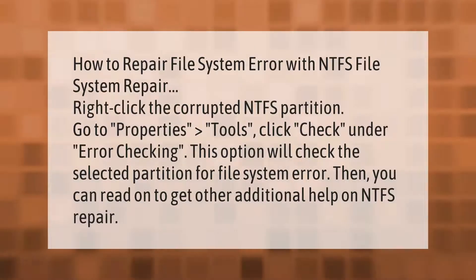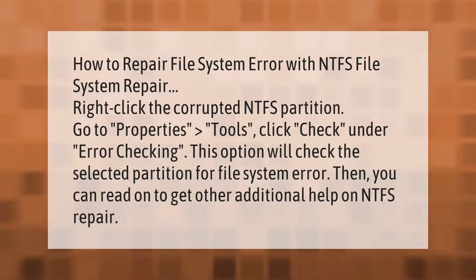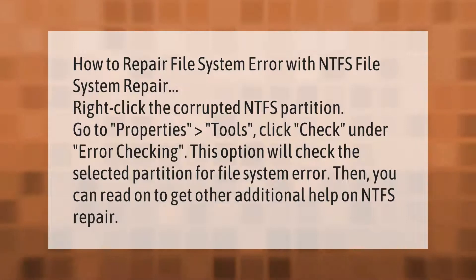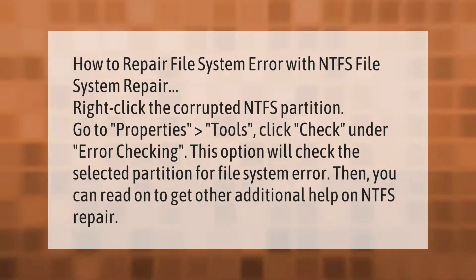To repair a file system error with NTFS file system repair: right-click the corrupted NTFS partition, go to Properties, then Tools, and click Check under Error Checking. This option will check the selected partition for file system errors. You can then read on to get additional help on NTFS repair.